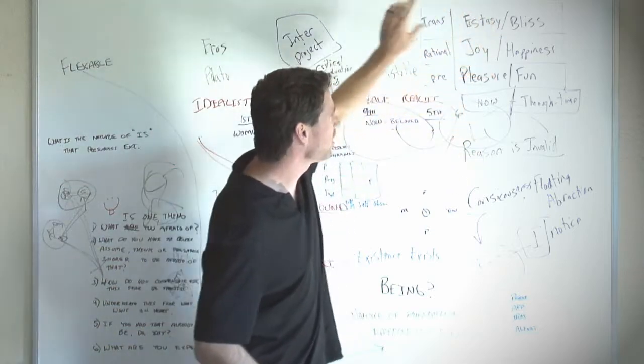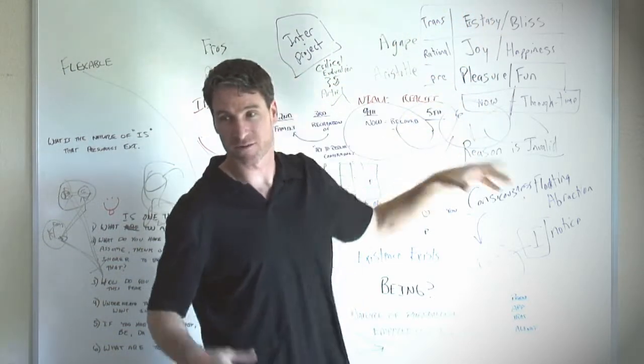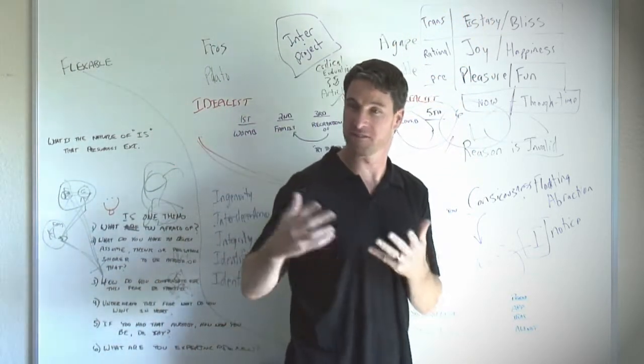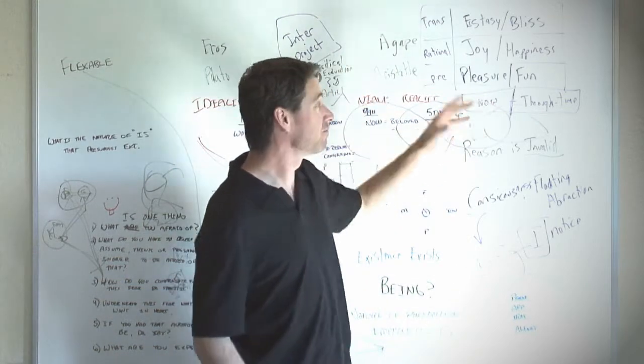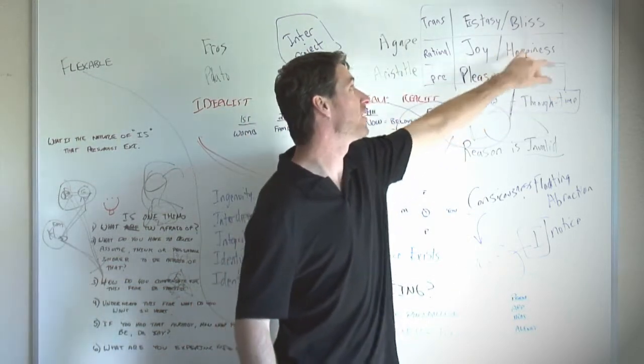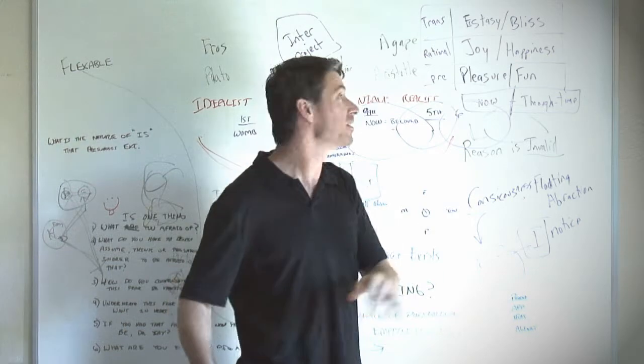So just a way of talking. Now, I call these six together, fun-joyment. It's another way of describing the fun-joyment state. It's pleasure and fun, joy and happiness, ecstasy and bliss. Fun-joyment.